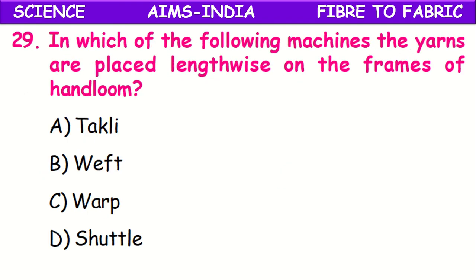In which of the following machines are the yarns placed lengthwise on the frames of a hand loom? It is the shuttle. In the shuttle, yarns are placed lengthwise on the frames of the hand loom.